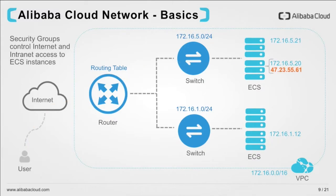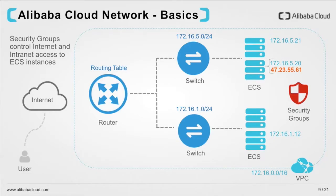An important part of Alibaba Cloud networking is called security groups. Security groups can be used to define allow and deny rules for communications with our cloud instances. The default security group in Alibaba Cloud allows ICMP, SSH, and RDP access to ECS instances. All other incoming access is blocked. All outgoing access is open by default on all ports. If you have ECS instances that share the same security requirements, you can bundle them together in a single security group. For example, you could set up a security group with incoming traffic allowed on port 80 and port 443 for HTTP or HTTPS, and then apply this to your group of ECS instances.